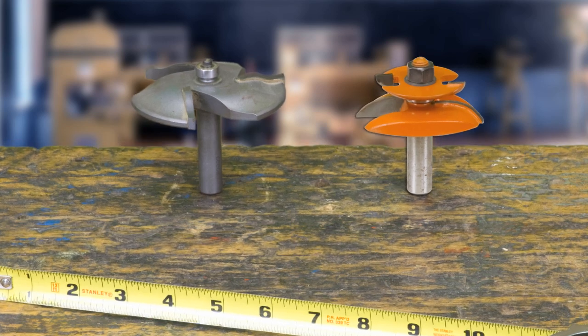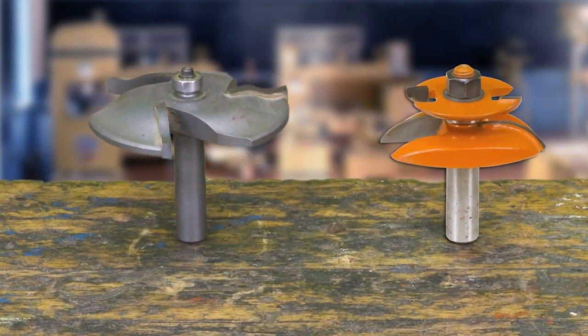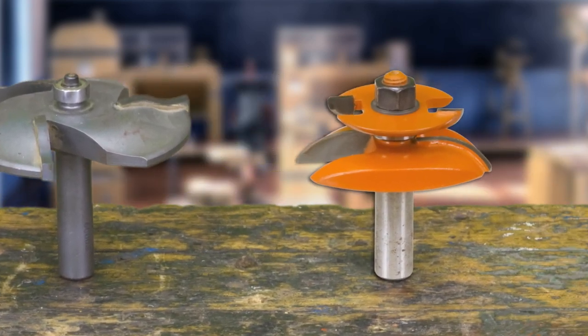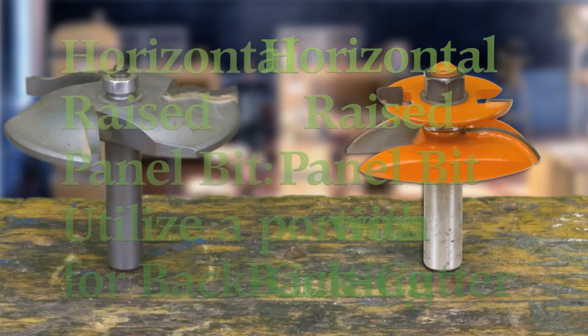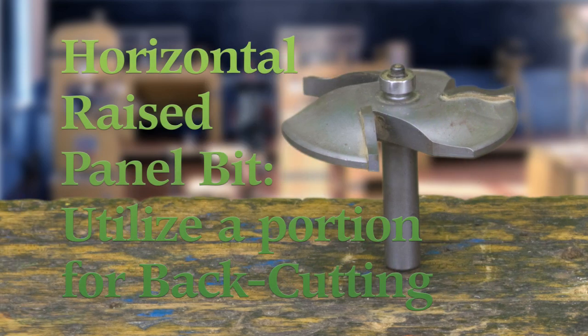Back cutting is necessary if your stock is thicker than 5/8 of an inch. Some horizontal bits come with back cutters, but I don't like sandwiching stock between them. Also, this type of bit doesn't allow you to incrementally raise it unless the back cutter is removable. A safer and easier way to make a back cut is to use a portion of the same raised panel bit you just used.